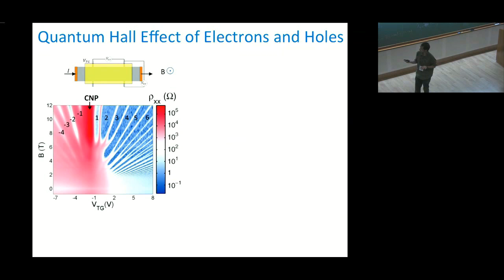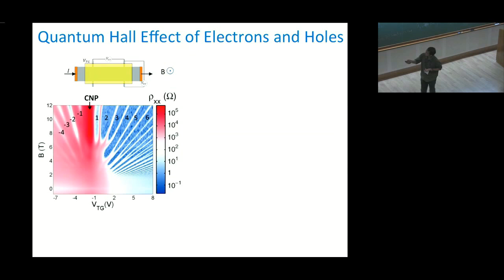This is the Landau fan diagram, where on one axis is the top gate voltage or carrier density, on the y-axis is the magnetic field, and in the color scale is the longitudinal resistivity — blue means very low, red means very high. On the electron side you can see very nice Landau levels one by one, including spin-split Landau levels. On the hole side you can also see Landau levels, but due to the low mobility of holes they are not as clean. This experiment was done at 80 milli-Kelvin.